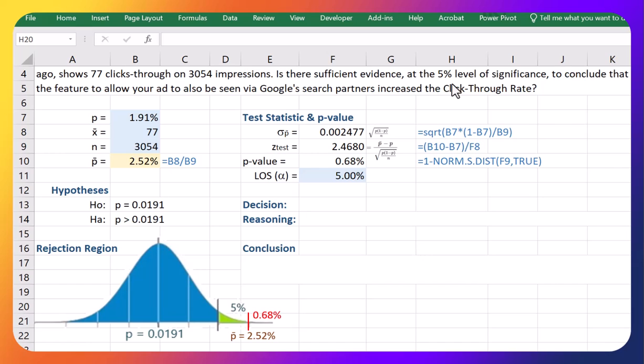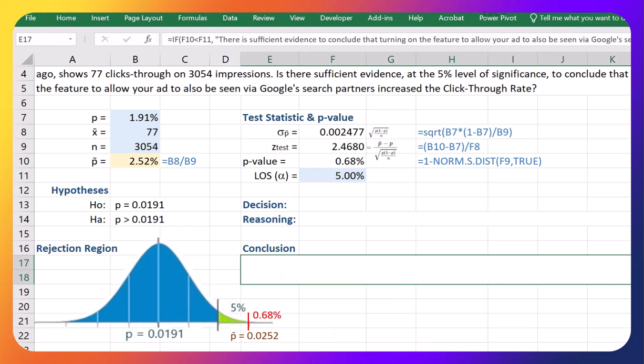Okay so if we want to mark the p-bar, the 2.52 percent on the graph, you can see it here it would be way up here, whereas the 1.91 percent is there. You can also write this as 0.02 like that if you prefer for the p-bar.